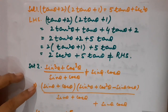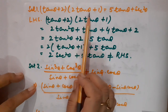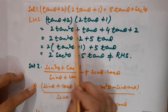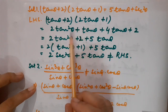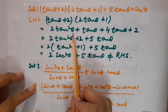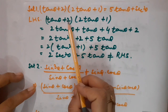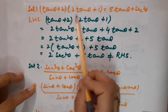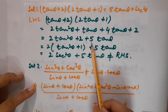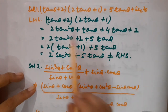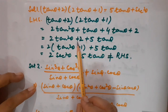Here is the solution of question number 1. I am going to take the left hand side. You can see there are 2 expressions in the bracket, so when I multiply them I get 2tan²θ + tan θ + 4tan θ + 2, and this tan θ + 4tan θ becomes 5tan θ. So I have 2tan²θ + 5tan θ + 2.